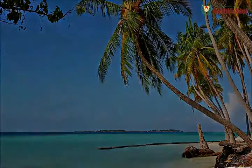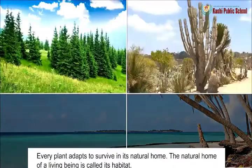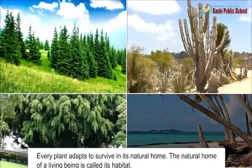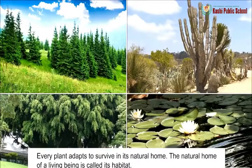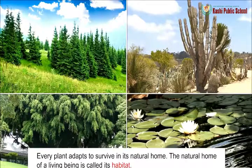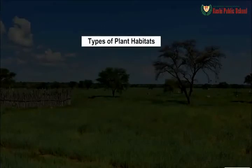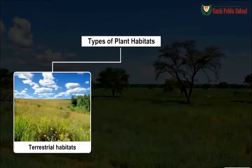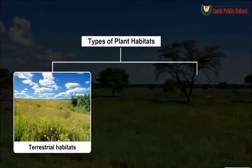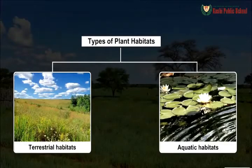So kids, every plant adapts to survive in its natural home. The natural home of a living being is called its habitat. Broadly, there are two types of plant habitats: terrestrial habitats and aquatic habitats.